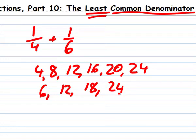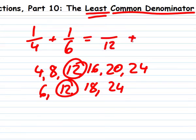Now, you just find the first number that appears on both lists. In this case, it's twelve. The simplest way to solve one-fourth plus one-sixth is to write them as twelfths.